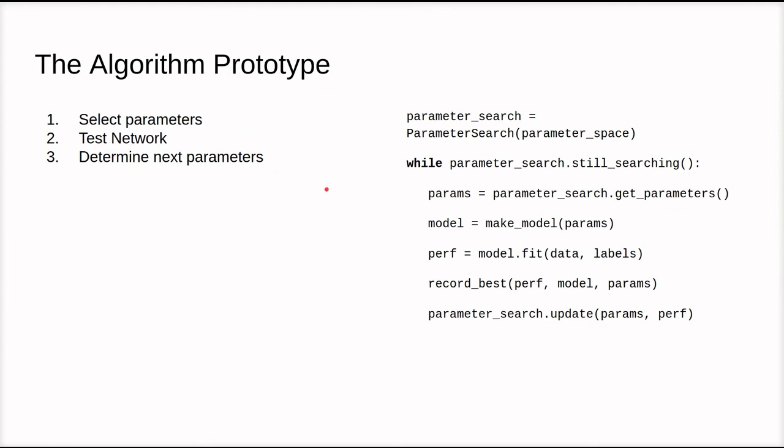So to define this more like code, we have some parameter search algorithm which will explore a space of parameters. And as long as we haven't decided to stop for whatever criteria we choose to decide to stop, we will take the parameters, make the model, fit the model, record the performance if it's an improvement in performance, and then we'll update our search and try and loop back and try the next set of parameters.